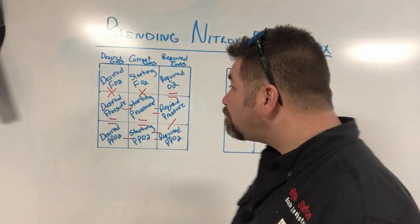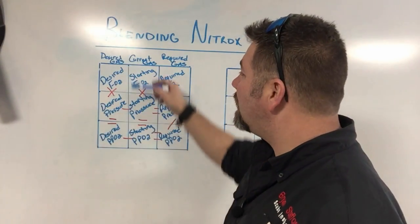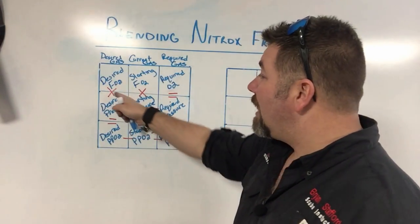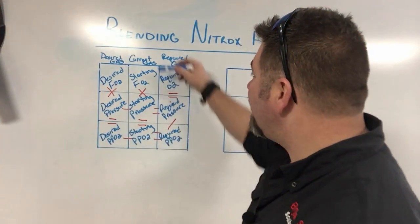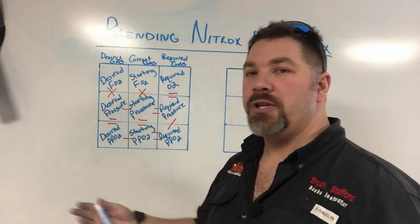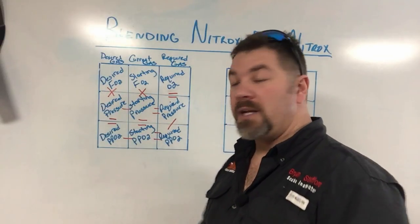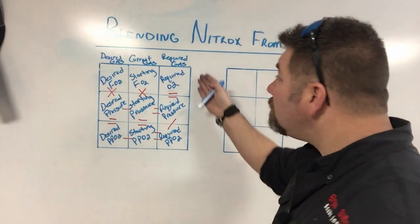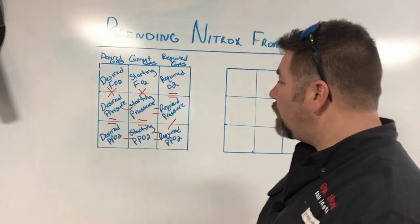Looking at the first row: in the desired gas column, desired fraction of oxygen multiplied by desired pressure gives the desired PPO2. In the current gas column, the starting FO2 — say I had a 32% cylinder breathed down to some pressure — multiplied by the starting pressure gives the starting partial pressure of O2. For the required gas column, we work from the bottom up: it gives the required partial pressure of O2 needed to reach the desired level.